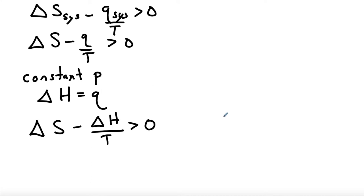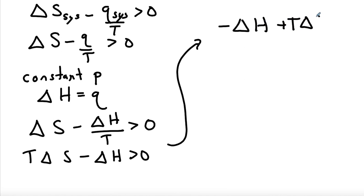At this point, we can multiply both sides by T. So we'll get T delta S minus delta H is greater than zero. I'm going to take this and reorder it: minus delta H plus T delta S is greater than zero. And now I'm going to divide by negative one. When you divide an inequality by negative one, you have to flip the sign.